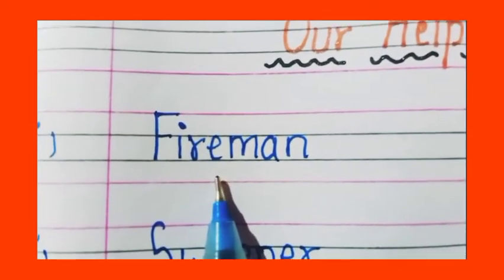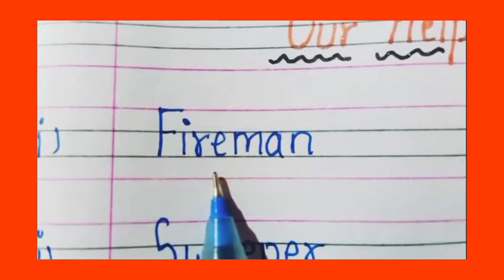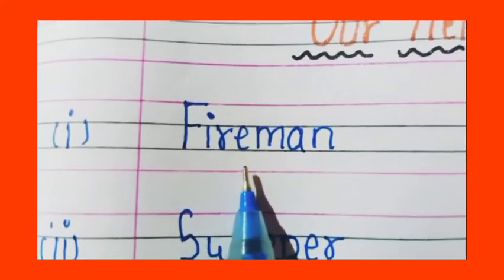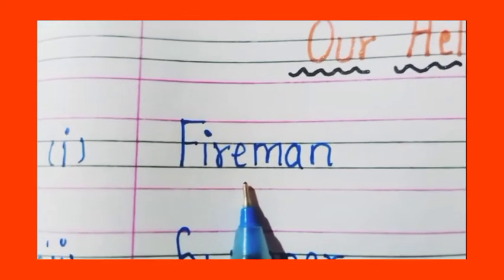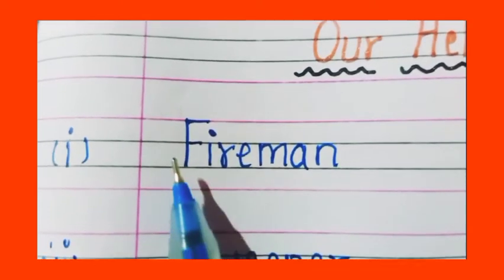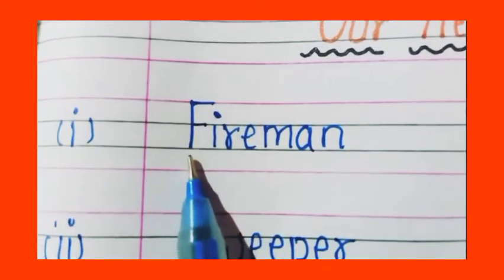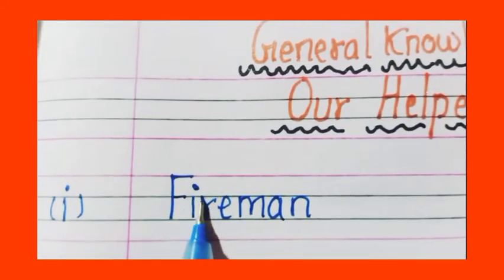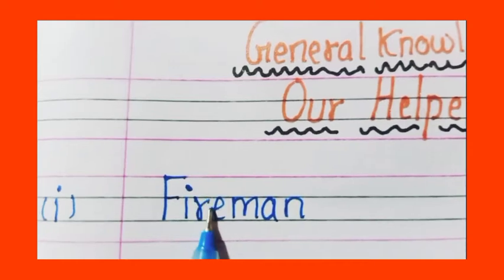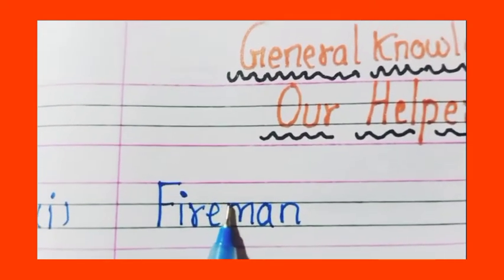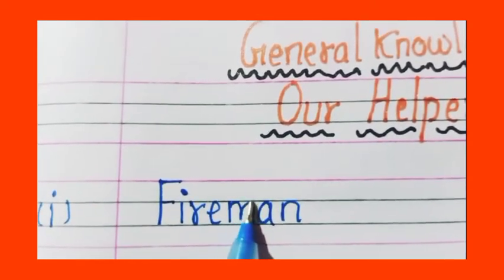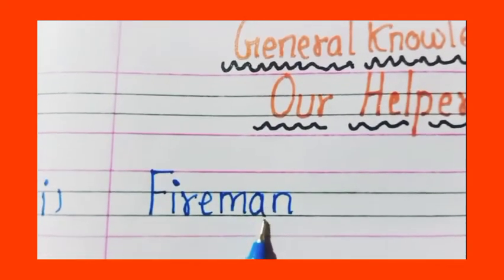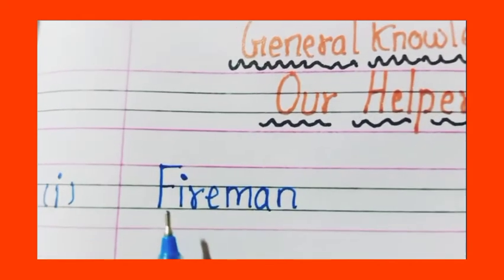Say students, our first name is fireman. Okay? Our first helper is fireman. How do you write fireman? How do you write? See, first we draw capital F, I, R, E, fire, M, A, N, fireman.